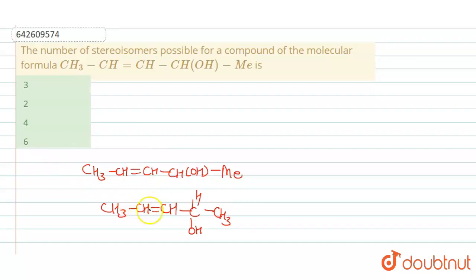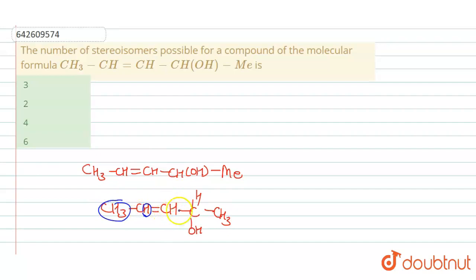If we talk about the C=C double bond, we check for geometrical isomerism. The condition for GI across a double bond is that each terminal double-bonded carbon atom must have two different groups. This terminal double-bonded carbon atom has H and CH3 — two different groups. And this other terminal double-bonded carbon atom also has two different groups.